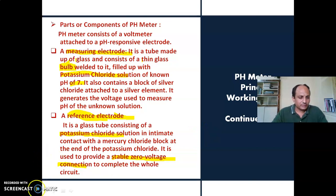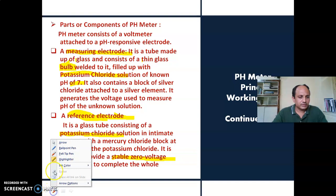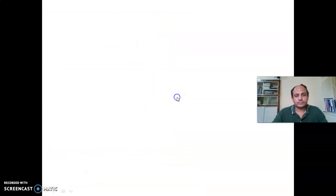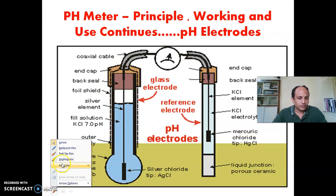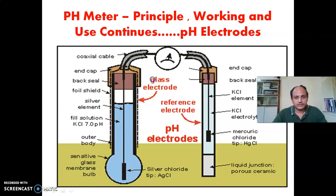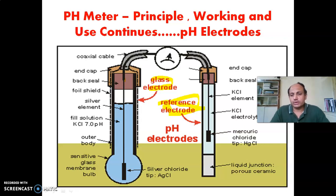The next slide shows the two electrodes and the display unit of the pH meter. One is called the glass electrode and the other is called the reference electrode. These two electrodes play an important role in the pH meter and are used for measurement of pH.